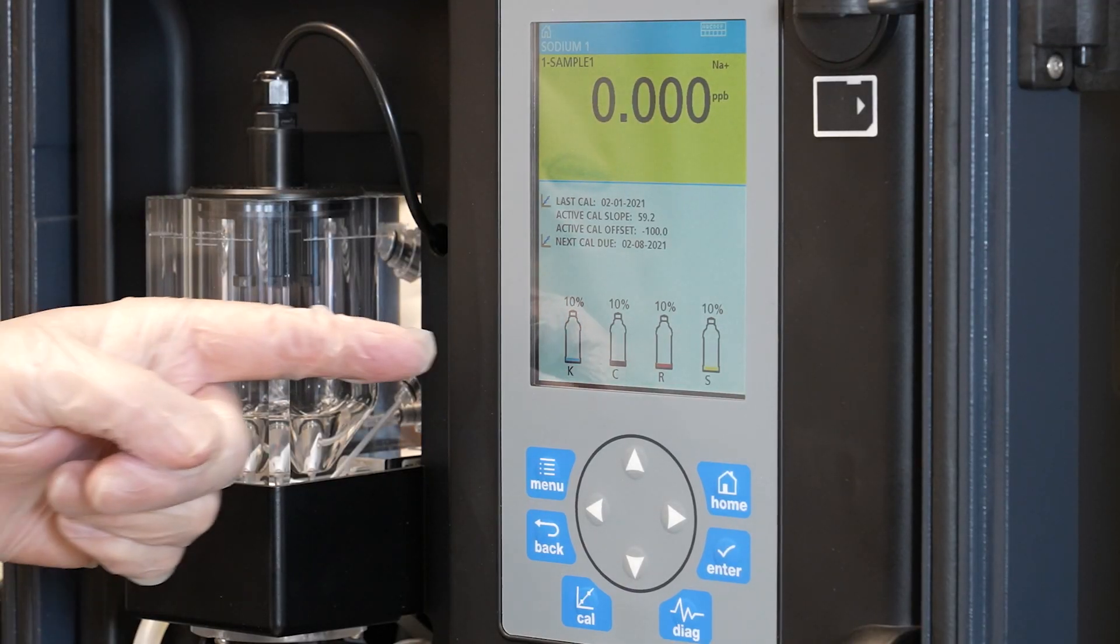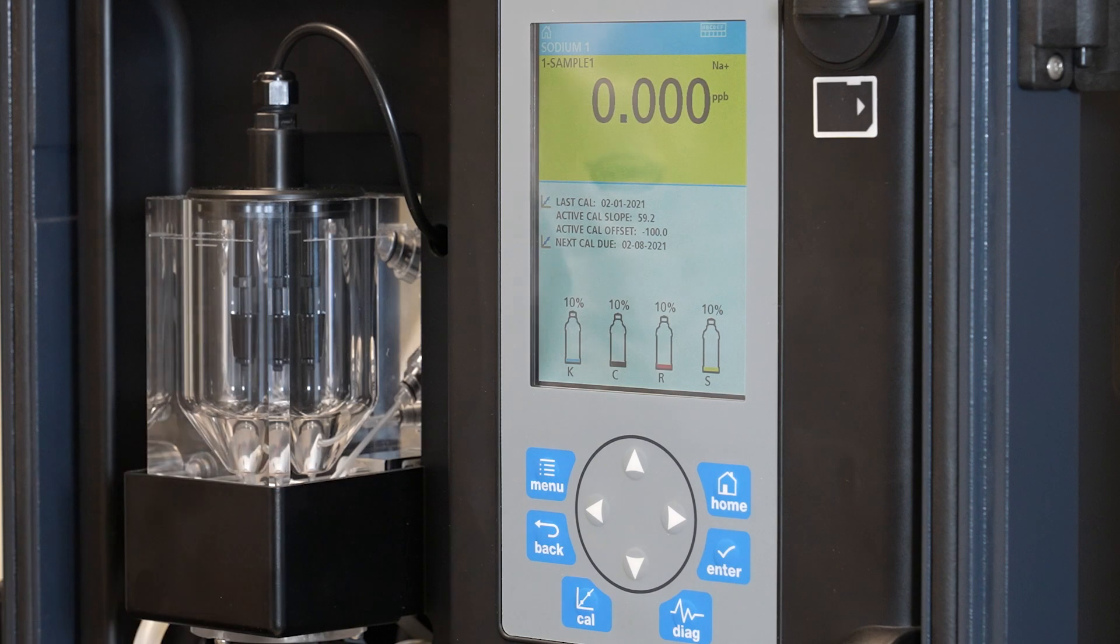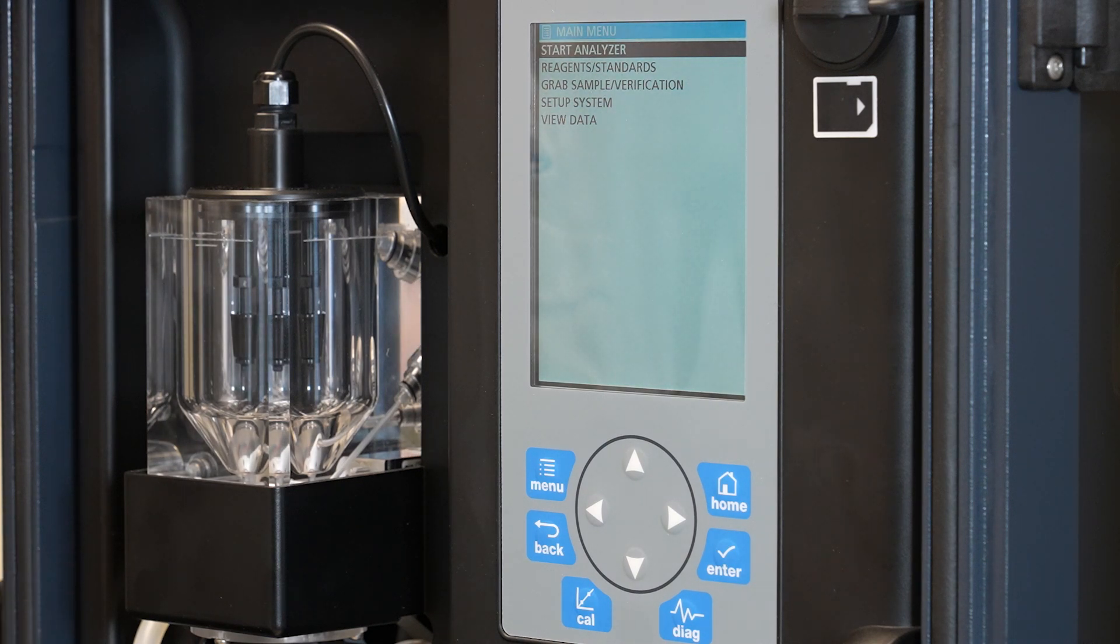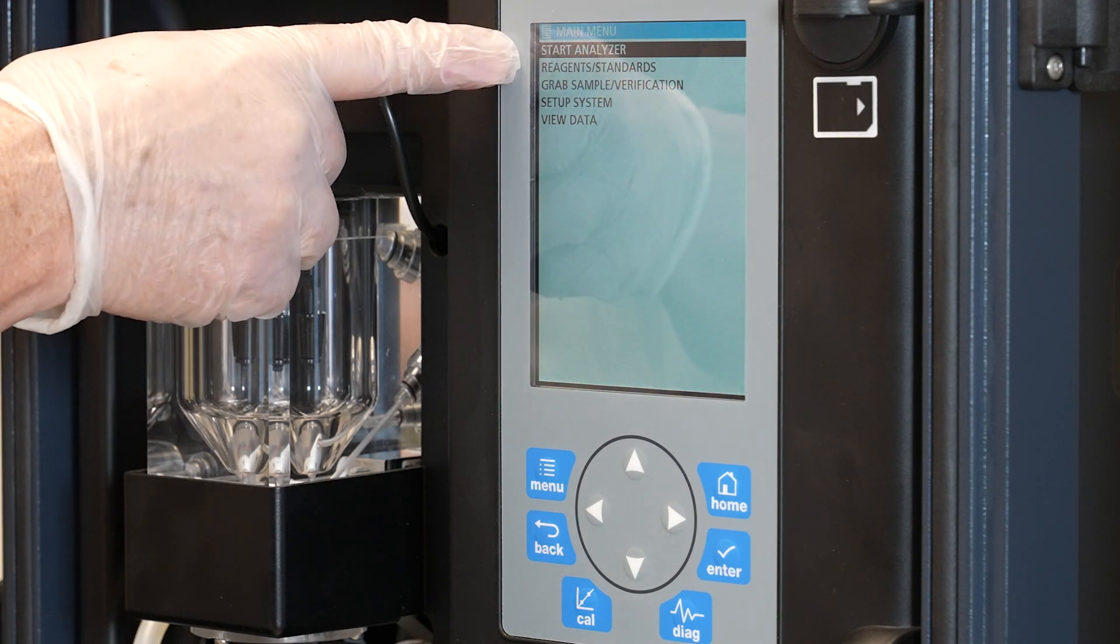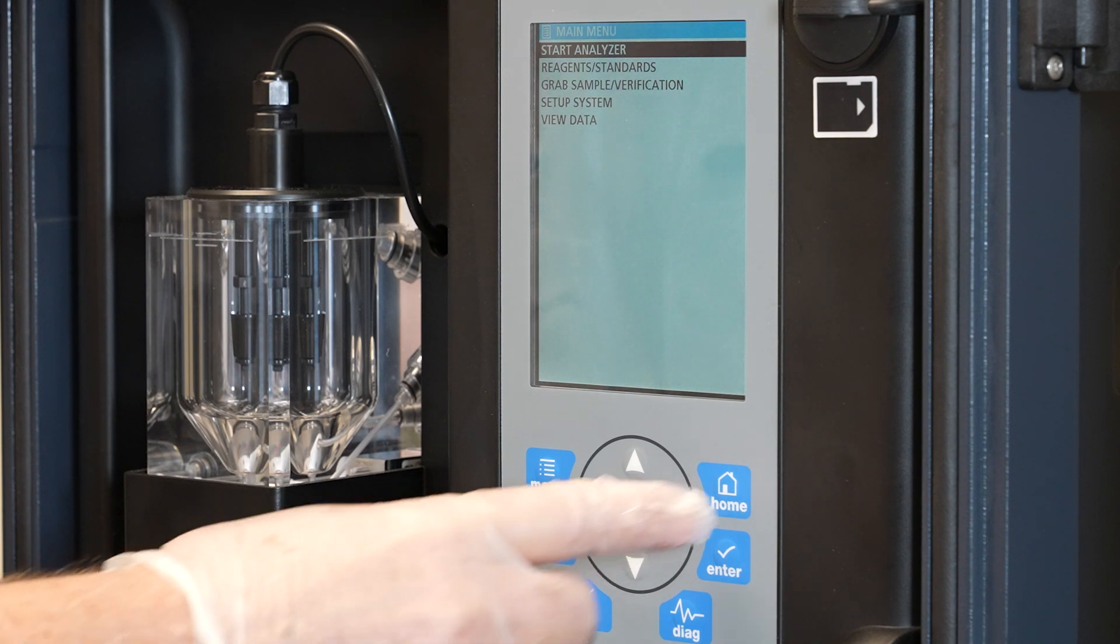So you will note on our NA5600 all the reagents are showing low in our prognosis so it's time to change reagents. We're going to go to the main menu and we'll make sure our instrument has stopped and it's not, it's no longer measuring, it's stopped the flow. We know that because it actually says start analyzer so we've actually stopped. So now we actually want to then move into the changing out of the reagents.